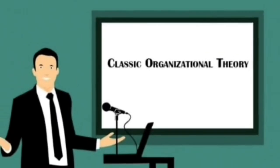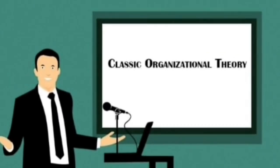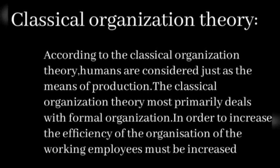First, we see classical organization theory. According to the classical organization theory, humans are considered just as the means of production. The classical organizational theory most primarily deals with the formal organization. In order to increase the efficiency of the organization, the productivity of the working employees must be increased.